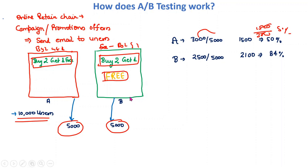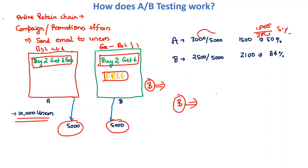Similarly, email B was also sent to 5,000 different users. Out of 5,000, 2,500 read that particular mail, and out of 2,500, 2,100 users landed on that website using that email — meaning the conversion rate is 84 percent. Since template B is performing much better than template A, the company will send template B to all 1 million registered users to get a better conversion rate.